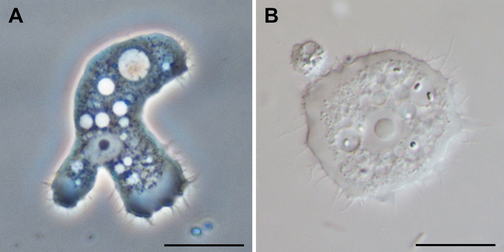Discosia amoebae lack hard shells, but some, like Cochleopodium and Korotnevella, secrete intricate organic scales which may cover the upper dorsal surface of the cell. No species have flagella or flagellated stages of life.